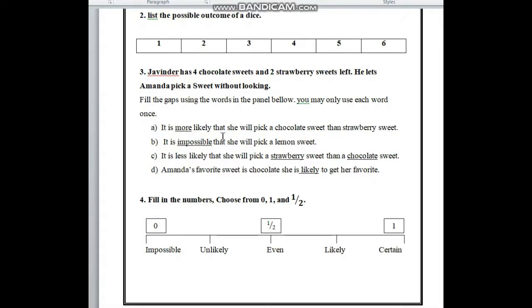Number A: it is blank likely that she will pick a chocolate sweet than a strawberry sweet. Here there are 4 chocolate sweets, so it is more likely that she will pick a chocolate sweet than a strawberry sweet.